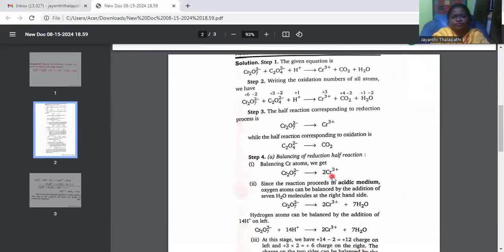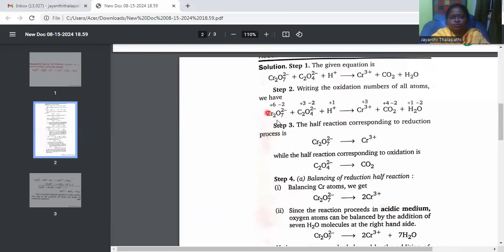First thing, what we need to do, we have to write the ions here, I mean the charges here. Over here, the charge of chromium is plus 6 for each chromium. You know, it is Cr2O7^2- which means it is minus 12. That means chromium will be plus 12. In this case, if Cr2 is plus 12, for one chromium it is plus 6.